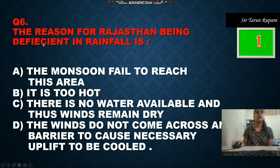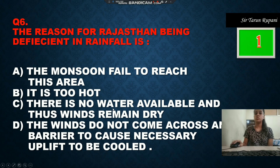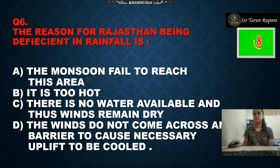Our next question: the reason for Rajasthan being deficient in rainfall is — option A is the monsoon fails to reach its area, option B is it is too hot, option C is there is no water available and thus it remains dry, option D is the winds do not come across any barrier to cause necessary uplift to be cooled. The correct answer is option D.